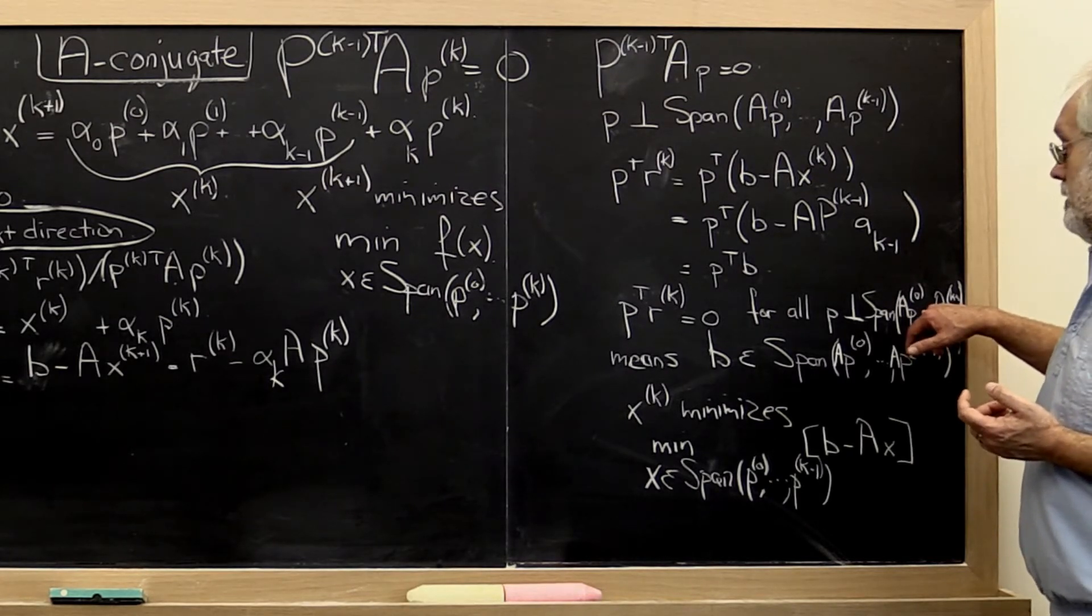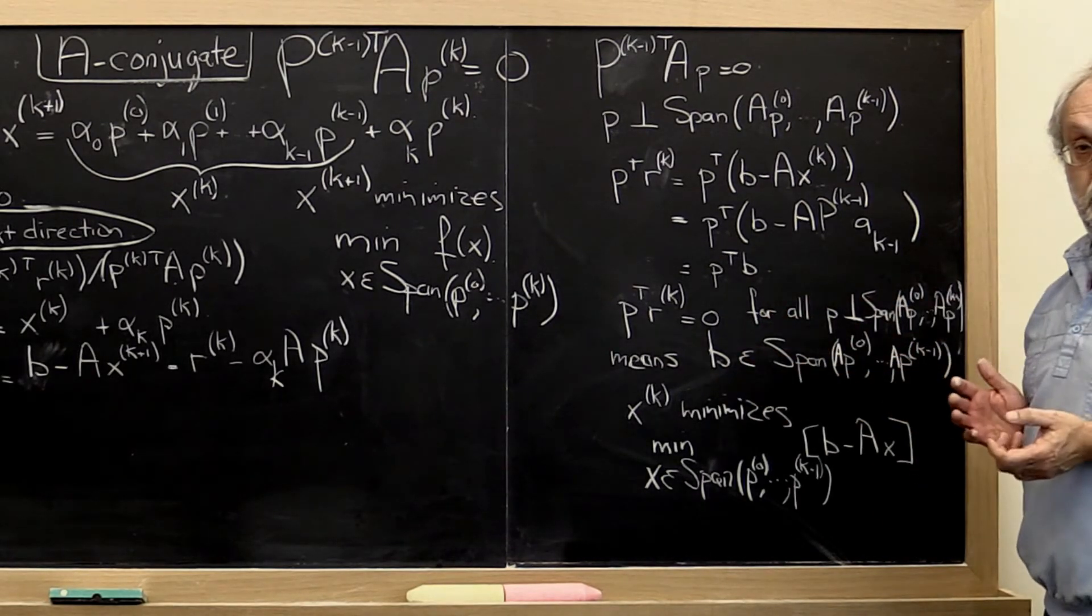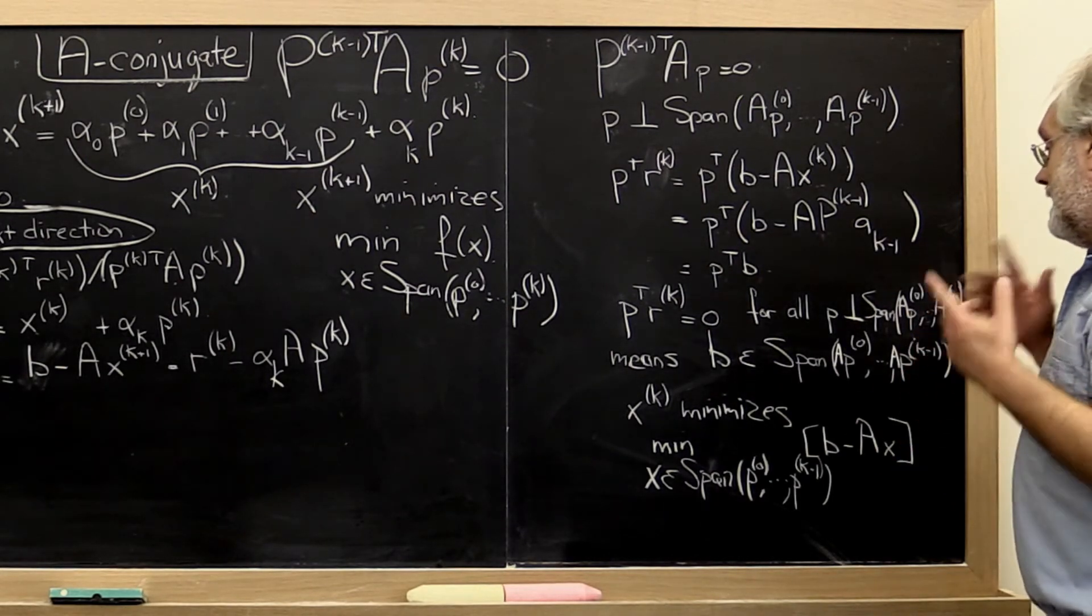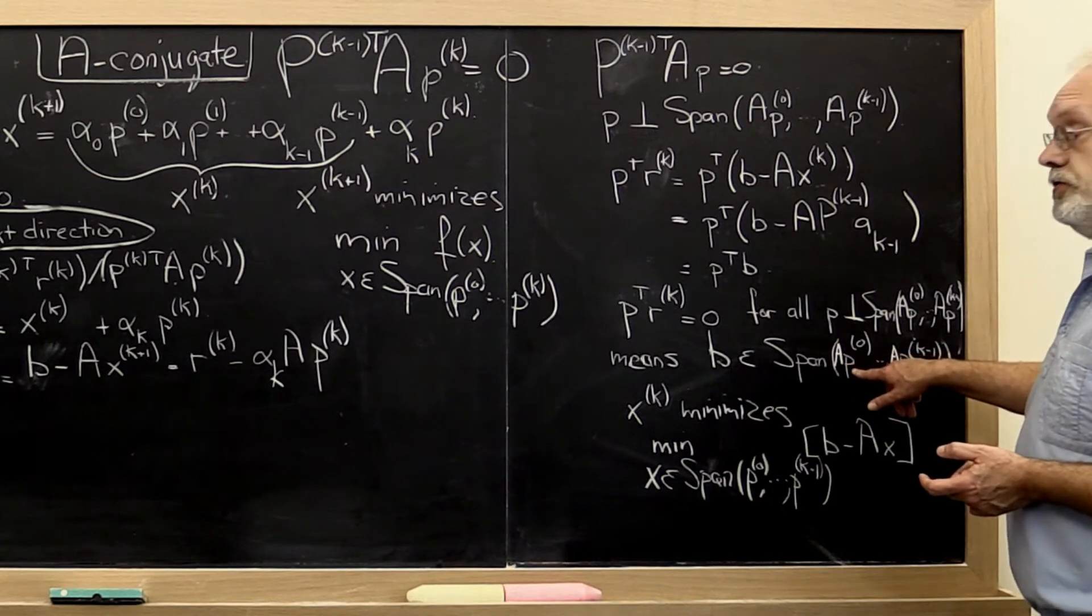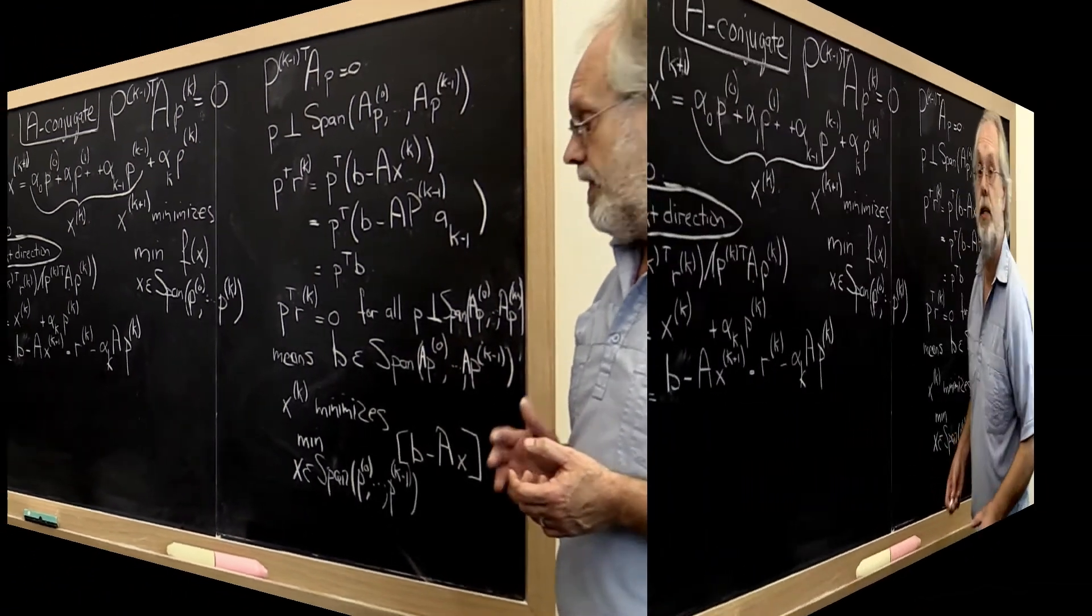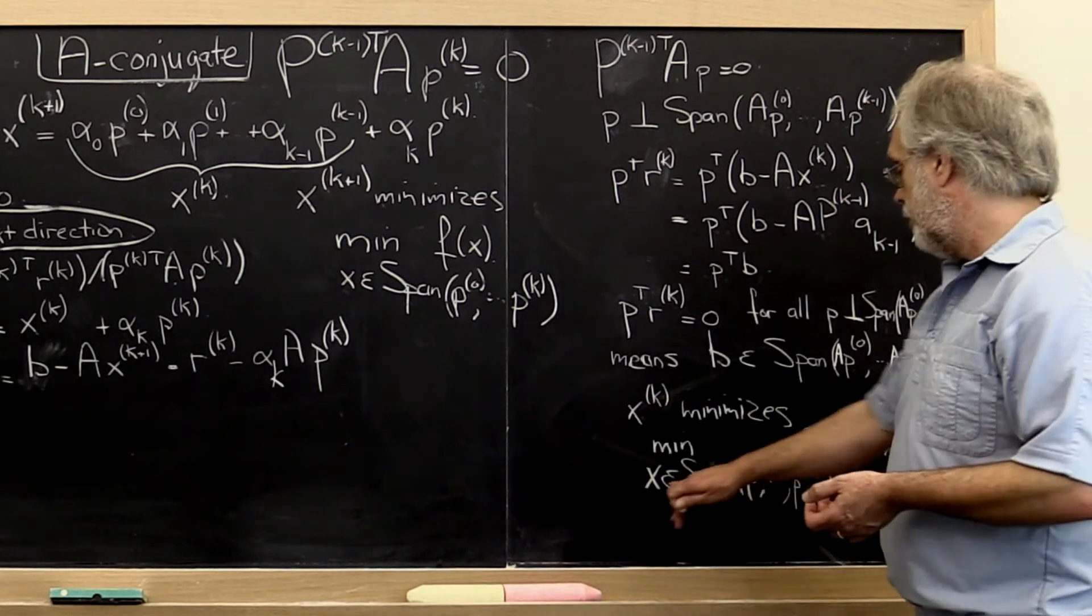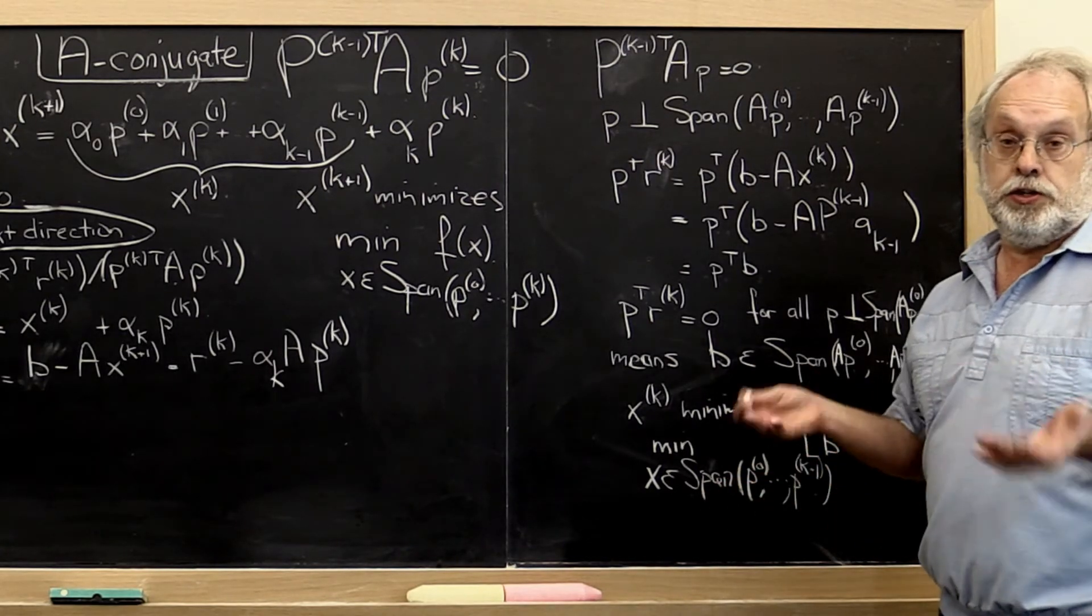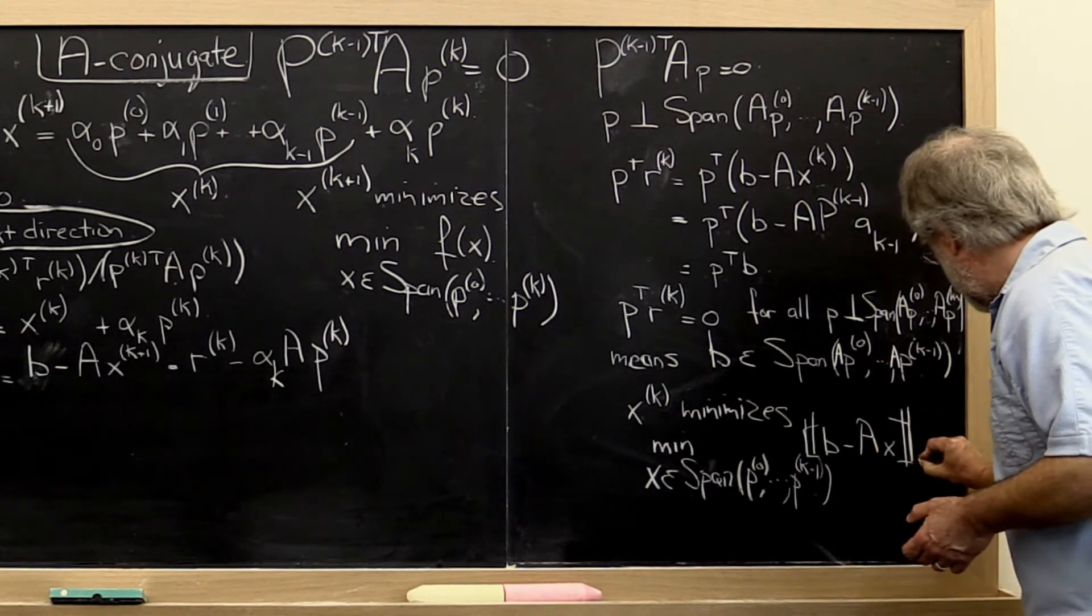Because this is the set of all vectors that are perpendicular to all P that are A conjugate to the previous search directions. So inherently that means that B can be written as a linear combination of A times the first search direction and so forth through A times the last search direction that we explored. Now if you think about it,